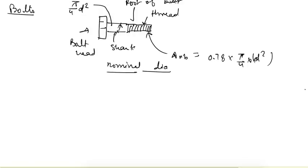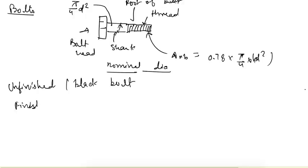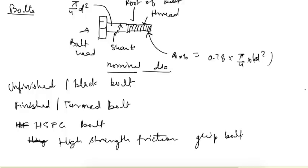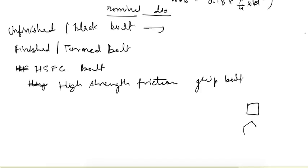Bolts can be classified into three types: unfinished (black) bolt, finished (turned) bolt, and HSFG bolt — High Strength Friction Grip bolt. The unfinished bolt has a square or hexagonal head. Since the shank surface is not finished properly, it is rough, so the contact between the plate and bolt is not proper.